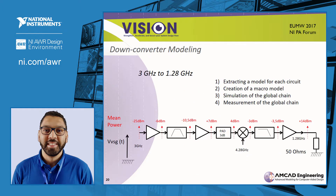I will now present an example of application of this methodology for the design of a down converter. It's a down converter from 3 GHz to 1.28 GHz with a mean input power of minus 25 dBm. We will go through the following steps: extract a model for each circuit using device modeler, create the schematic of the down converter, and simulate the modeled system and compare with measurement data.